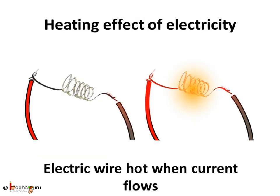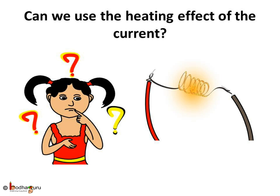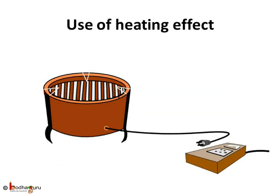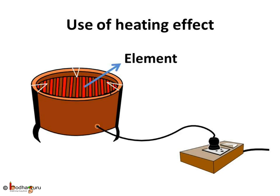Due to the heating effect of the electric current, the wire gets hot when an electric current passes through it. Can we make use of this property, or is it just useless or at times even hazardous to us? Let us look at some of the appliances used at home — how does the room heater or the electric heater used for cooking work? Even the iron box used for ironing our clothes. All these appliances which are made to produce heat, like heater and toaster, run on the heating effect of electricity. All these appliances contain a coil of wire called an element.